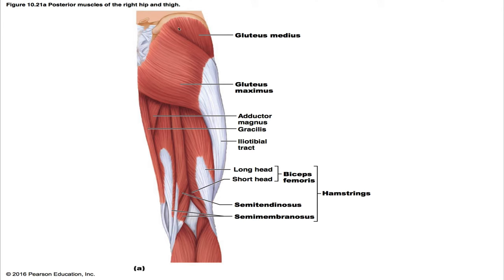The gluteus medius is a thick muscle largely covered by the gluteus maximus and is also an important intramuscular injection site — specifically the ventral gluteal site, considered safer because you're farther from the sciatic nerve. Its origin is between the anterior and posterior gluteal lines on the lateral surface of the ilium, and its insertion is by a short tendon into the lateral aspect of the greater trochanter of the femur. Its prime action is to abduct and medially rotate the thighs; it steadies the pelvis, and its actions are very important in walking. It's innervated by the superior gluteal nerve.